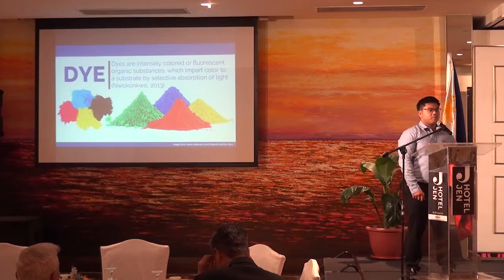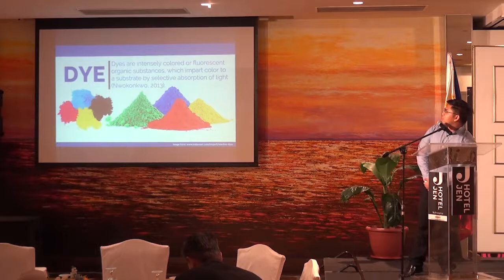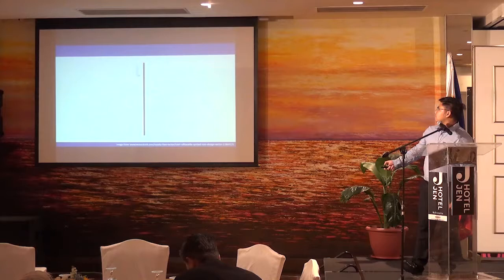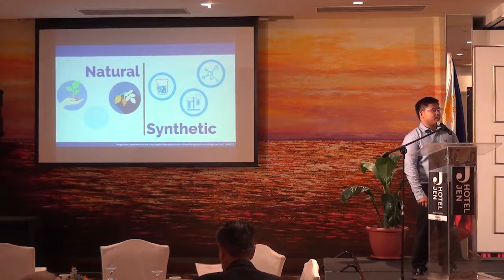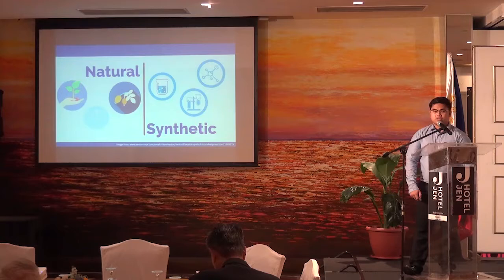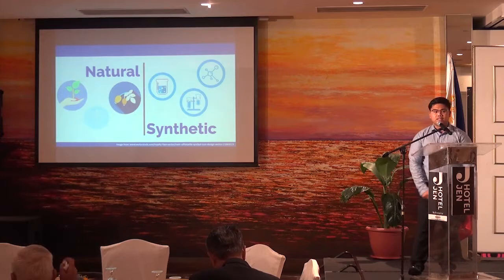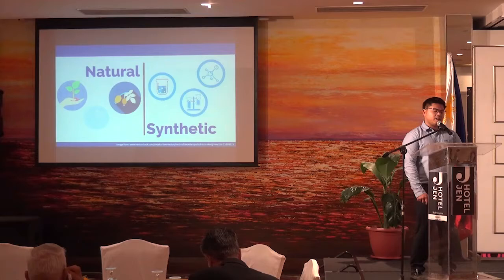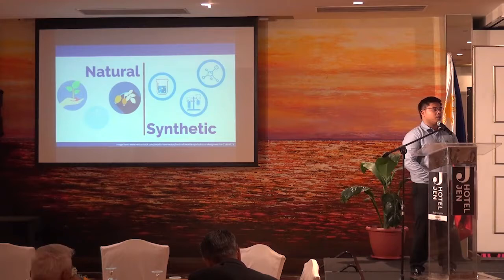Dyes are practically applied in almost every product all around us. They are used to impart color to a substrate by selective absorption of light. We have two types of dyes: the natural and the synthetic dyes. Natural dyes are organically produced and derived from plants, roots, and even fruits, and they were only used in ancient times. Today we are currently using the synthetic types of dyes, which are produced in the laboratory and engineered, giving us an advantage since we can produce a lot of colors as chemicals can easily be manipulated.